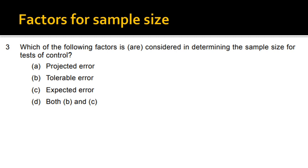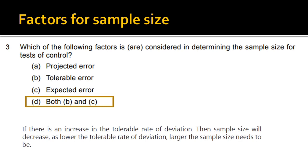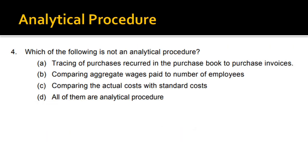Next: which of the following factors are considered in determining the sample size for the test of controls? Apart from projected error, tolerable error and expected error are the factors considered in determining the sample size. Therefore, option D is the correct answer. Also, if there is an increase in the tolerable rate of deviation, the sample size will decrease — the lower the tolerable rate of deviation, the larger the sample size needs to be.